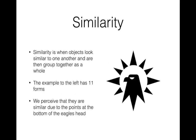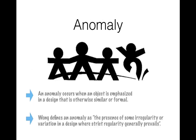Similarity — similar objects are grouped together as a whole. If objects, forms, or shapes are similar, we tend to group them together into a grouping. Often that creates a new image, like this one here with the eagles. Anomaly is when a group of objects or shapes are very similar, but one is slightly different. By being slightly different, our attention is drawn to it.